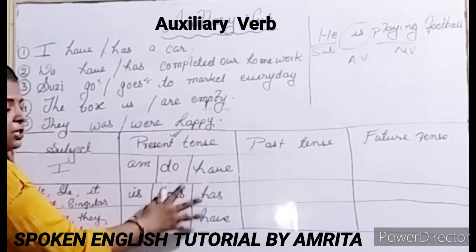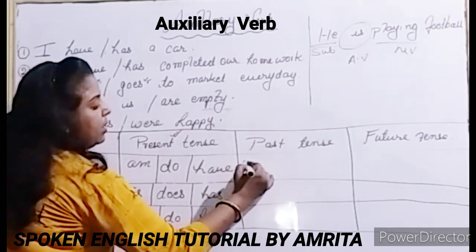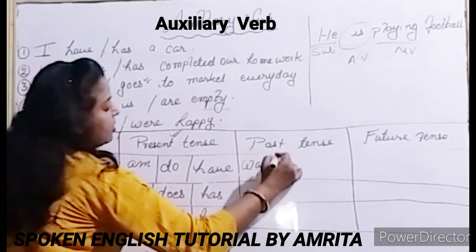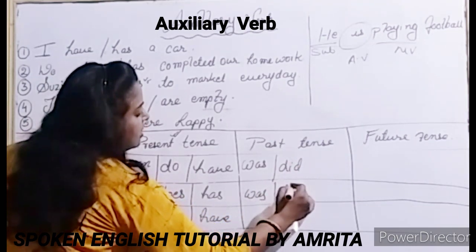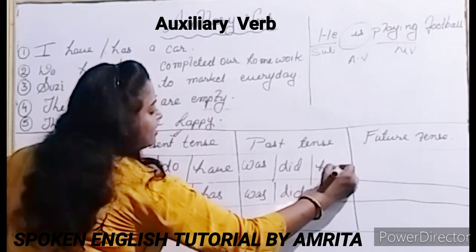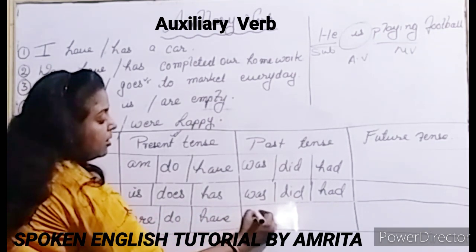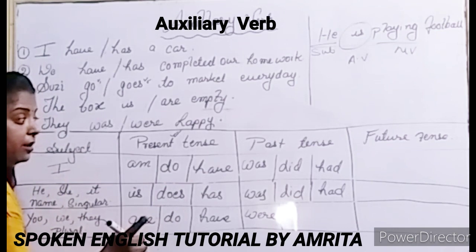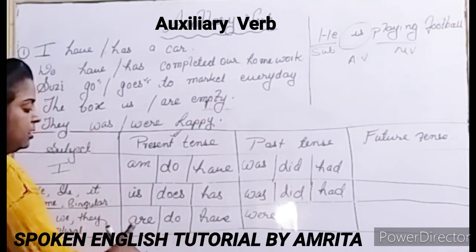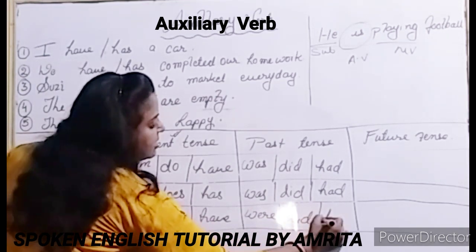Now let's make the past tense of all three groups. The past tense of 'am' and 'is' is 'was.' The past tense of 'do' and 'does' is the same — 'did.' The past tense of 'has' is 'had.' For the third group, the past tense of 'are' is 'were' — pay attention to the pronunciation: 'were.' The past tense of 'do' is 'did' again, and for 'have,' the past tense will be 'had.'